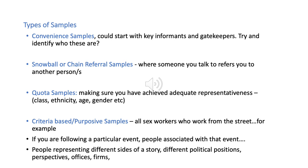You can also think about quota samples — making sure you have achieved adequate representativeness: people of different classes, ethnicities, ages and genders. Whether you require this representativeness depends on your project. If you are studying a religious ritual, a representative sample lets you show multiple perspectives — old, young, women, men. But you might decide instead to work on criteria-based purposive sampling — for example, choosing only sex workers who work from the street. You might also build your research around specific events, people representing different sides of a story, or different political positions and perspectives.